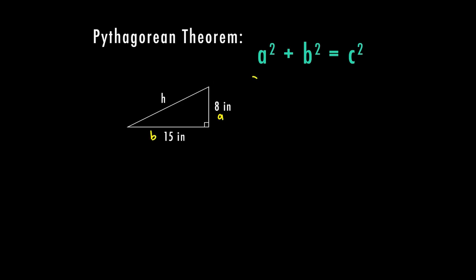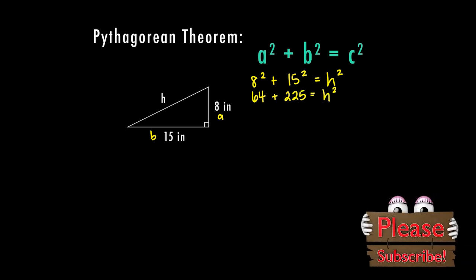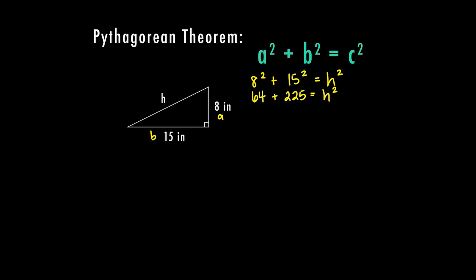So I have eight is my A, and 15 is my B, and H is my C. So I have 8² + 15² = H². Eight squared is 64, 15 squared is 225, and H squared is what I'm solving for. And don't be afraid to use your calculator for these. There is a button on the calculator that has the squared symbol. So if you type in the number and hit that button, it automatically calculates for you. Then if I add these together, I get 289 equals H squared.